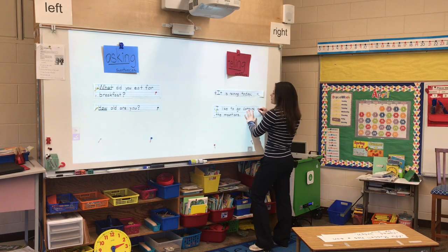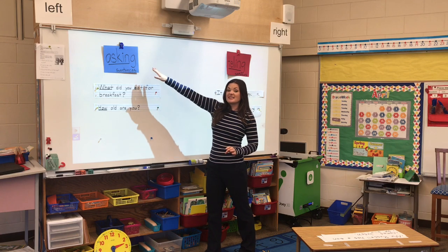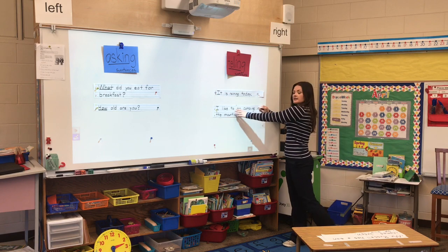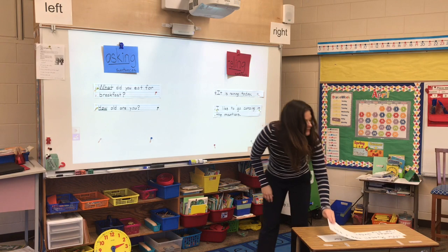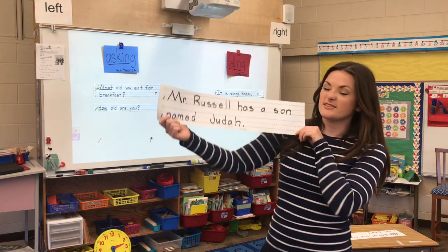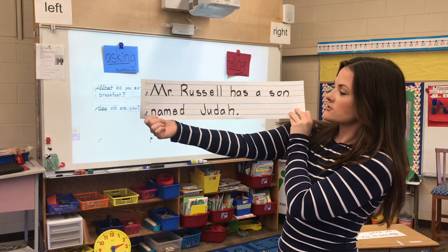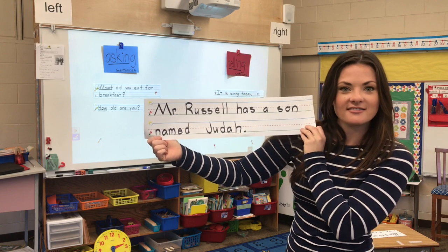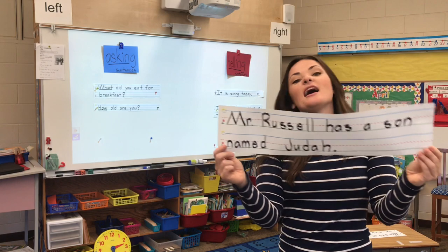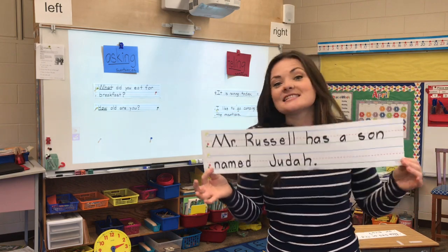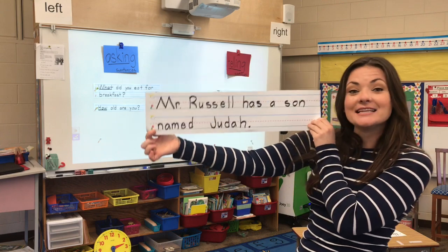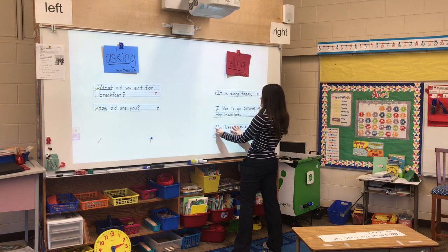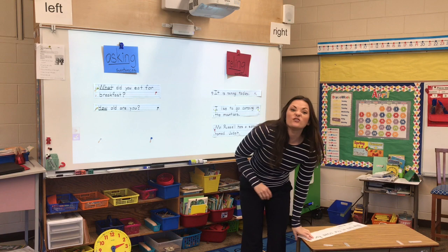So far we have two asking sentences that are asking a question, and we have two telling sentences that are telling us something and end with a period. All right, I've got a few more. Here's the next one. It says, 'Mr. Russell has a son named Judah.' Is that true? Yep, it is. It starts with a capital and ends with a period, and it's telling you something — so it is a telling sentence. Mr. Russell does have a son named Judah, and you should have seen him in our video a few videos ago.